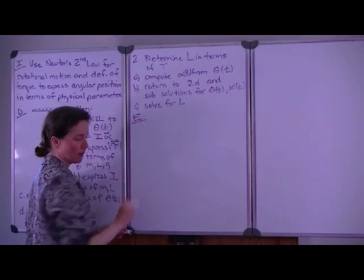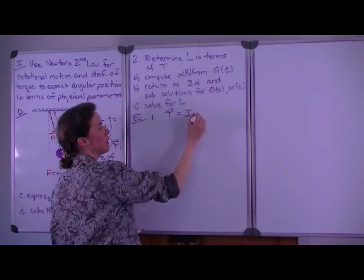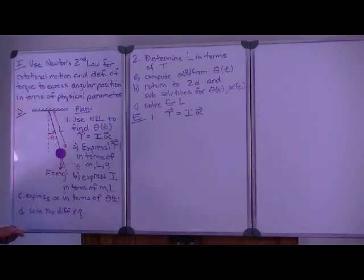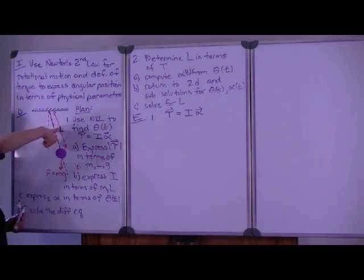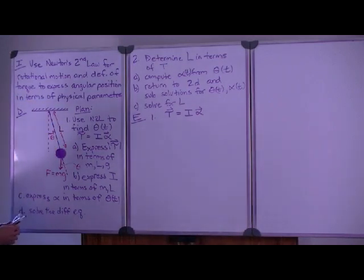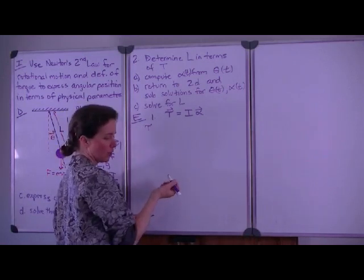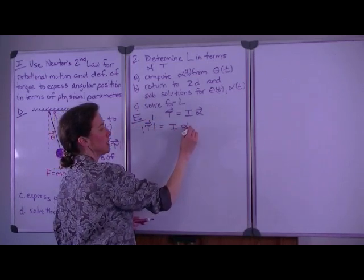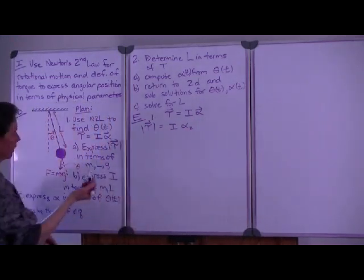As we evaluate this problem, we begin with Newton's second law that says that the torque is equal to the moment of inertia times the angular acceleration. Now, in this case, using the right-hand rule, we have the moment arm crossed with the force vector, and the direction of torque is going to be into the board. We can call that our z-direction, and so we're only concerned about that direction of the torque. So if we want the magnitude of the torque, that's going to be equal to the moment of inertia times the acceleration in the z-direction, or into the board.